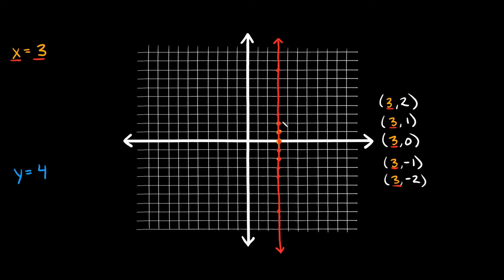So if you wanted to plot x is equal to 3, you would simply draw a line all along this part of the graph, because at this line all your x-coordinates are equal to 3. Now, what if you had something like x is equal to negative 6? Where are all of your x-coordinates equal to negative 6? Well, coming back negative 1, 2, 3, 4, 5, negative 6 on the x-axis — all along this part of the graph, all your x-coordinates are equal to negative 6.